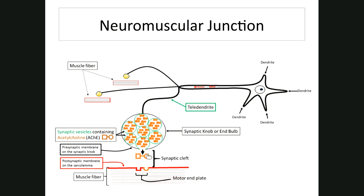Muscle tone is a condition in which motor units of a muscle are always active, producing a tense, firm muscle as a result of a given number of muscle fibers being contracted at a given time. Spontaneous impulses stimulate a given number of muscle fibers, making your muscles firmer. People who exercise a lot have greater muscle tone — more motor units being stimulated — giving them firm muscles.